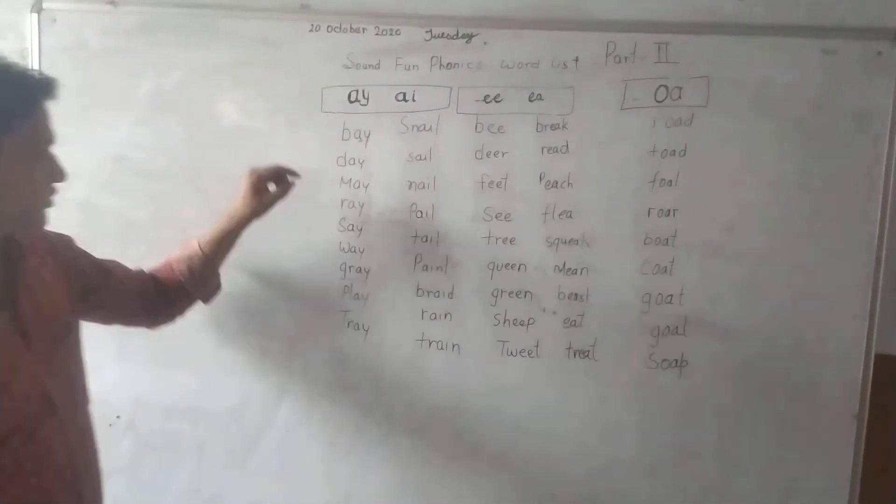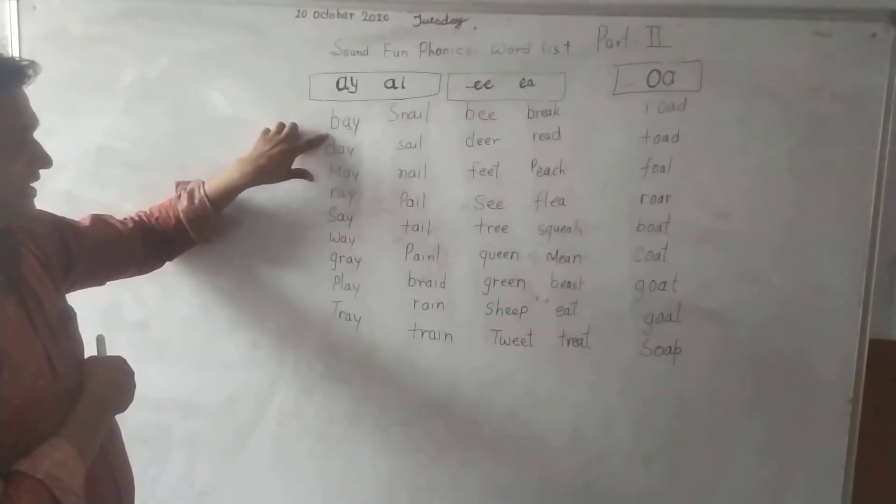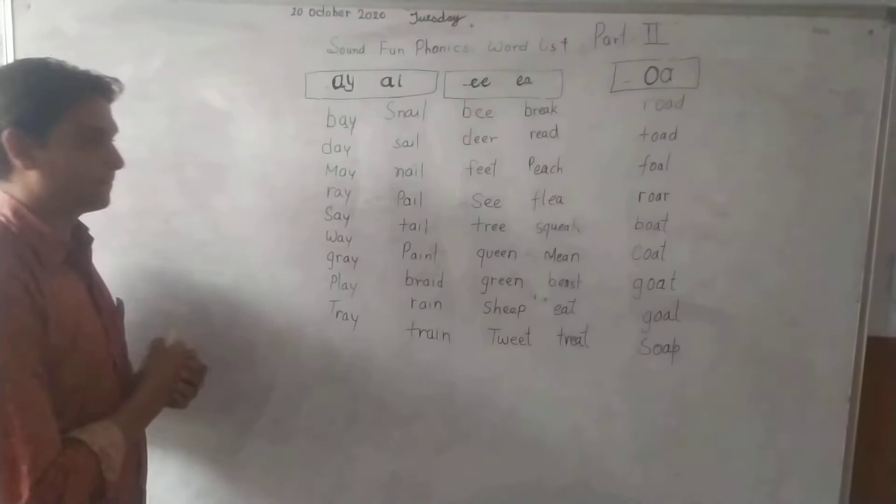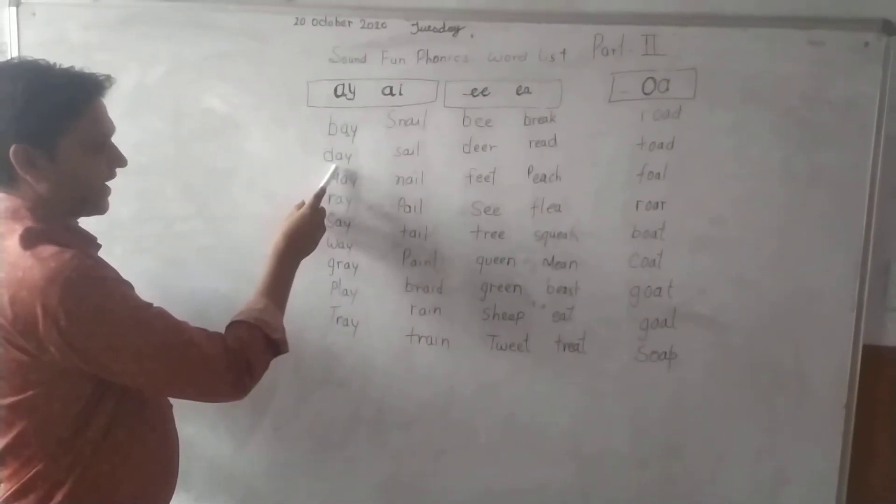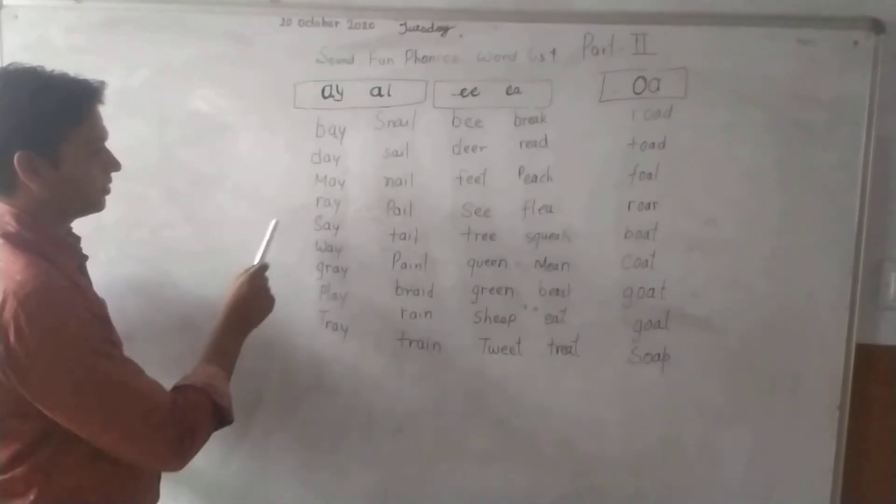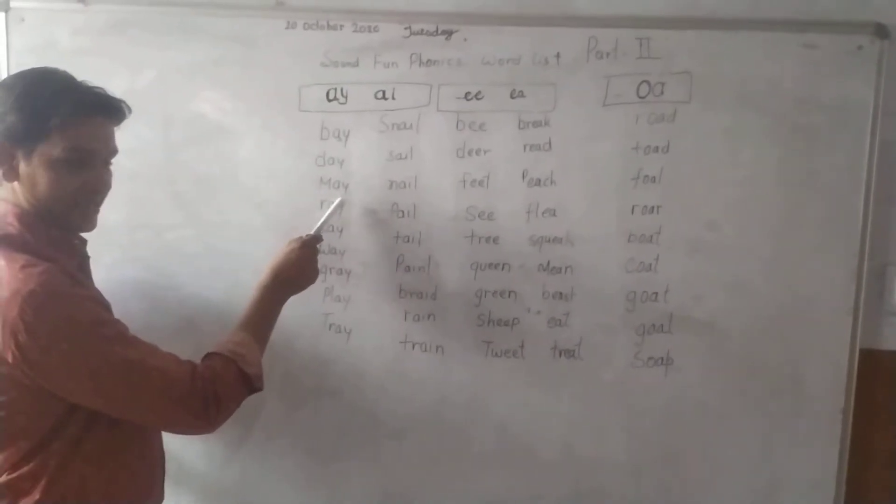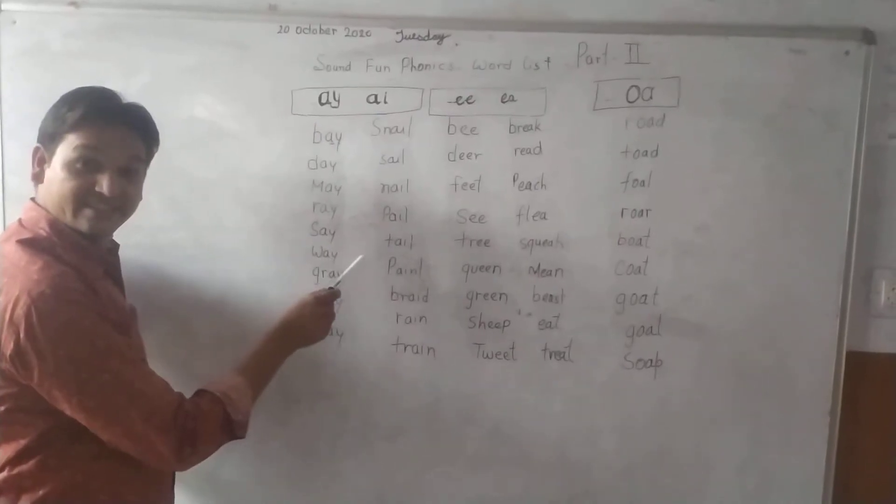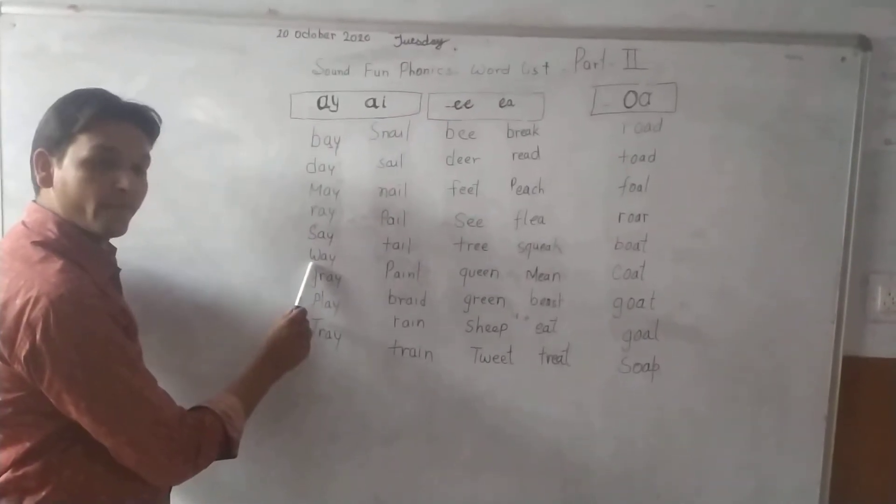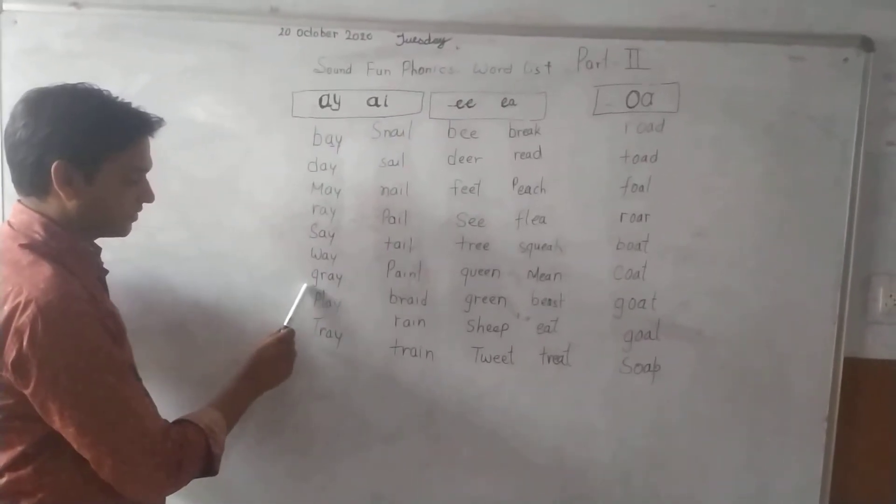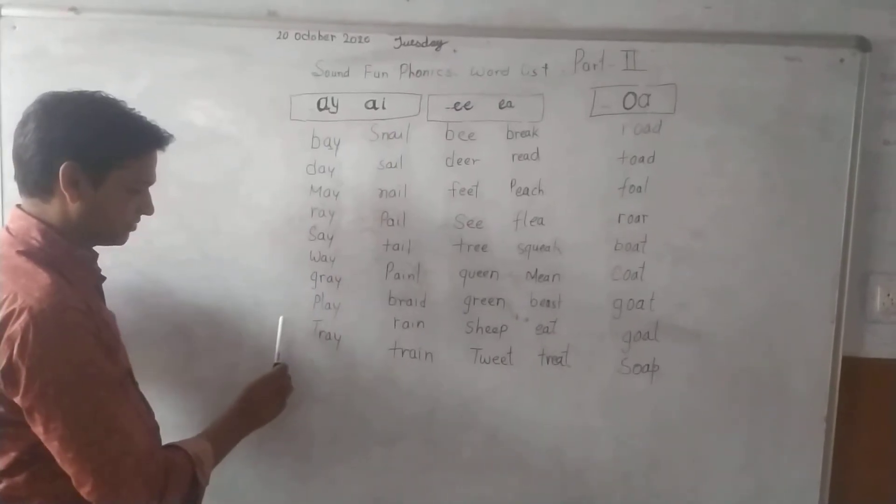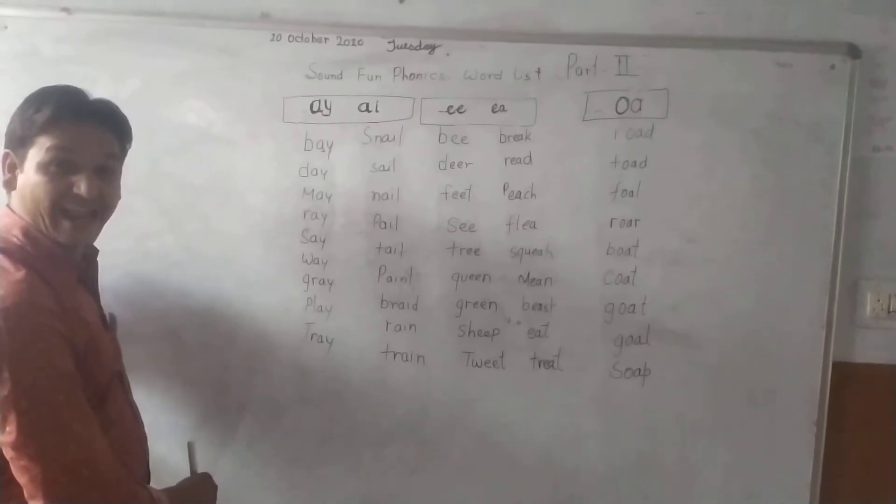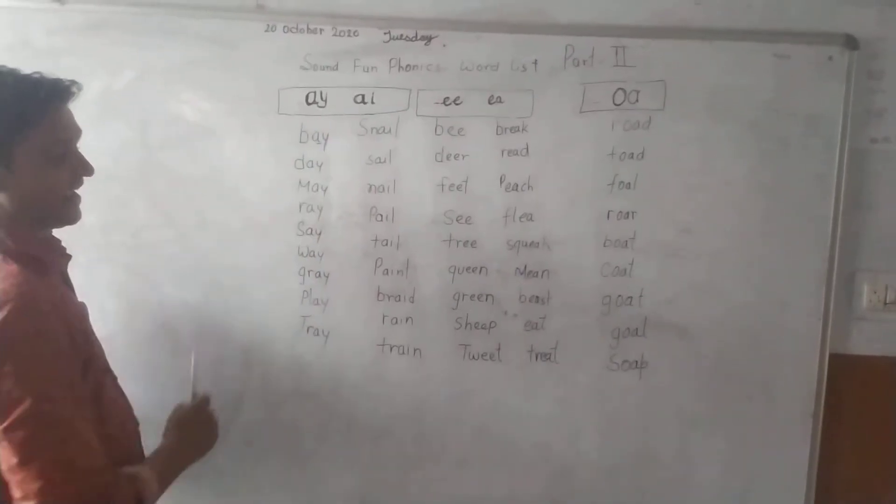Starting with the AA sound: Bad, Day, May, We, Say, Gray, Play, and Pray.